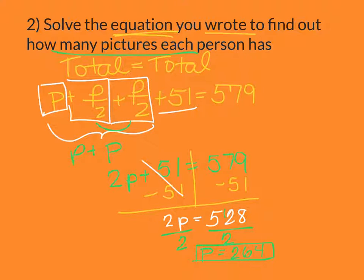I still have to figure out how many pictures each person has. So I'm going to remind myself at the top that P equals 200. Whoops. I do that so often. So sorry if it confuses you, but make sure you keep following along. P equals 264.